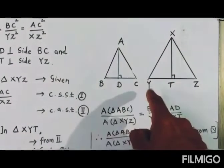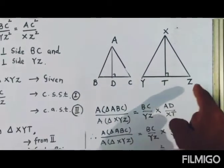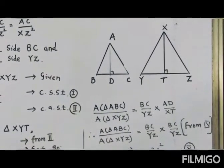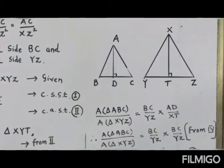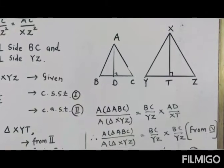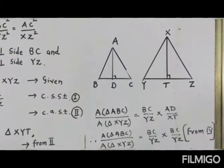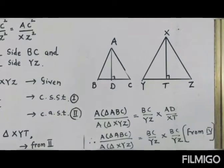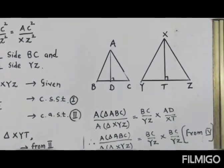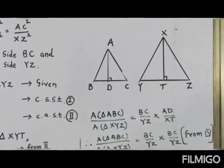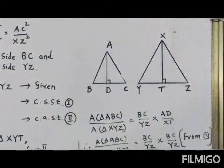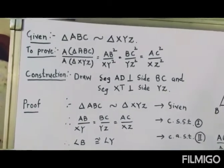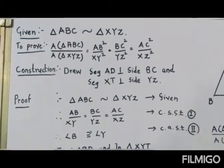Here, triangle ABC is similar to triangle XYZ. These two triangles are similar, so their sides AB, BC, and AC are proportional to the sides of triangle XYZ — that is XY, YZ, and XZ. So I will write: AB upon XY equals BC upon YZ equals AC upon XZ.